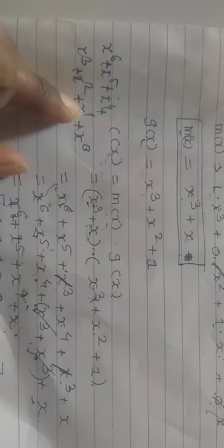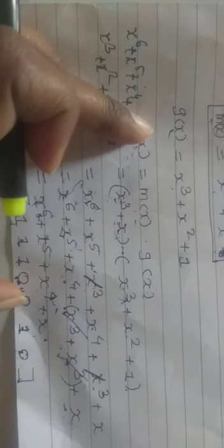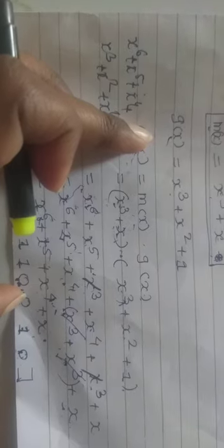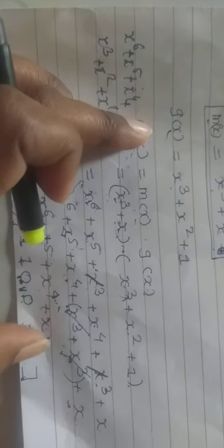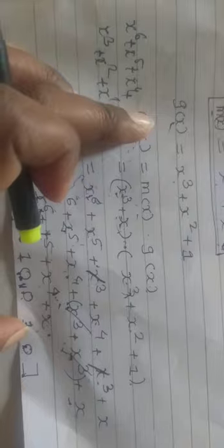Compare this polynomial against X⁰ through X⁶. X⁶ is present so coefficient is 1, X⁵ is present so 1, X⁴ is present so 1, X³ is not present so 0, X² is not present so 0, X¹ is present so 1, and X⁰ is absent so 0. So the code word is 1110010, and in this way you can calculate the code words.